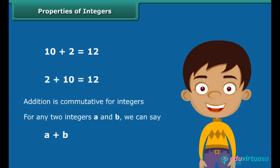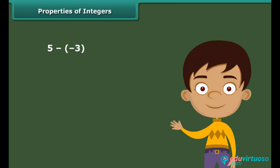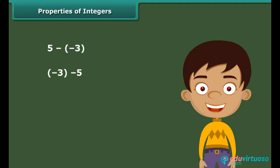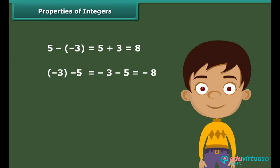Hence addition is commutative for integers. In general, for any two integers A and B, A plus B is equal to B plus A. But is 5 minus (−3) the same as −3 minus 5? No. Because 5 minus (−3) equals 5 plus 3 which equals 8, and −3 minus 5 equals −8. Hence subtraction is not commutative for integers.